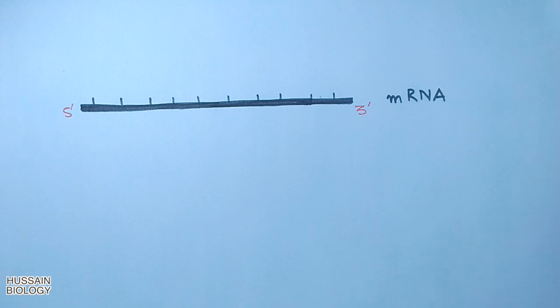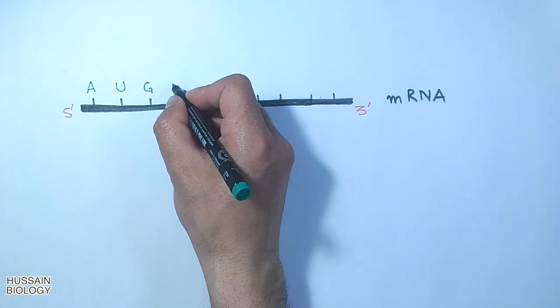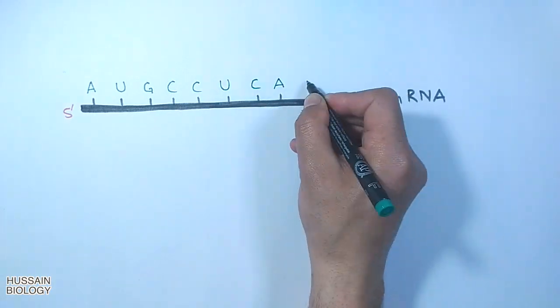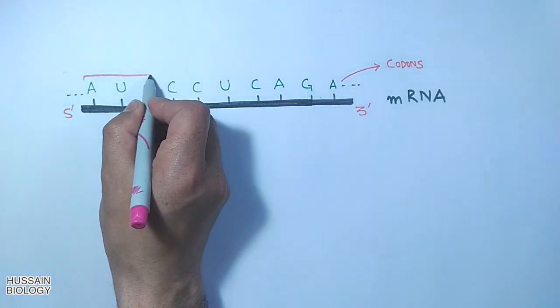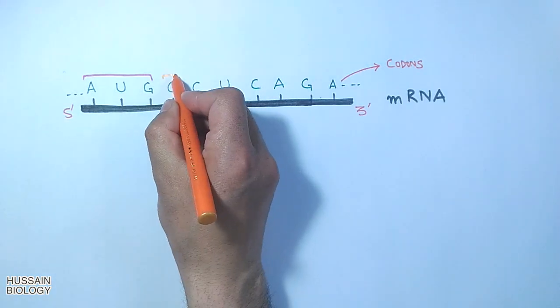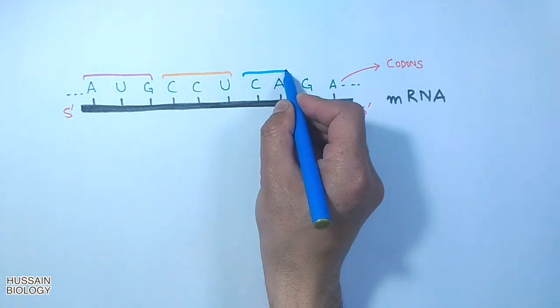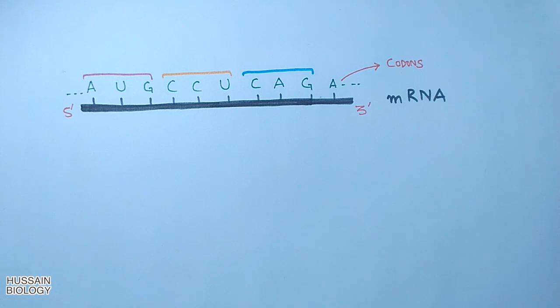In this mRNA molecule we have a sequence of nucleotides. As shown in the diagram, we have adenine, uracil, guanine, cytosine, cytosine, uracil, cytosine, adenine, guanine, and adenine. From this sequence we have codons in the form of three nucleotides. The first codon shown here is AUG, followed by CCU, and the third one is CAG.